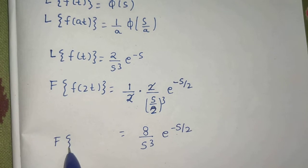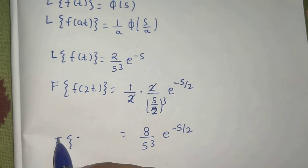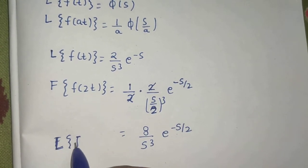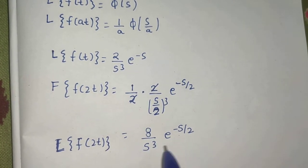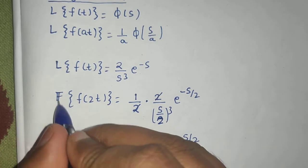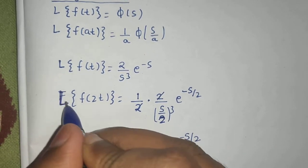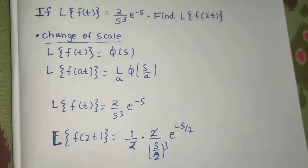So this is your final answer. Laplace of f of 2t is going to be 8 upon s cube e power minus s by 2.